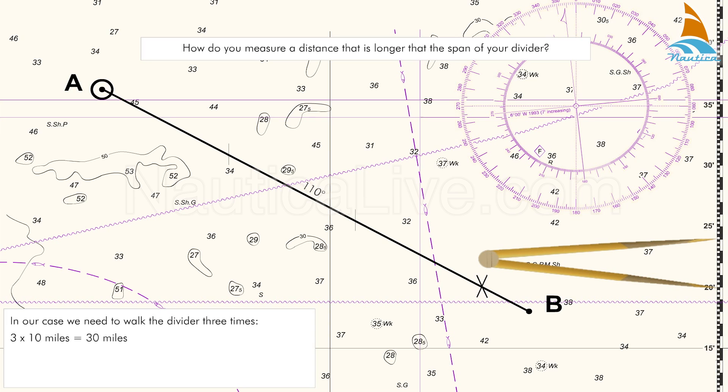On the scale you find that in this case the distance is 4 minutes or 4 nautical miles. So the distance from A to B is 34 nautical miles, 30 miles plus 4 miles.